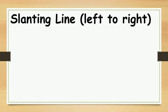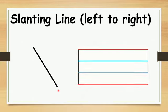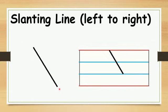Again, there is a slanting line that goes from left to right. We are going to write the slanting line from left to right — we are going to come slanting. On your four line, you need to write from line 1 to line 3, from left to right. Slanting line, left to right.